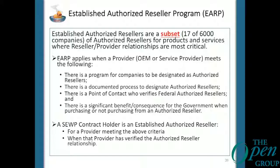We have an EARP — Enterprise Authorized Reseller Program. We found 17 companies that met the requirements: a central point of contact and, most importantly, repercussions for not buying through authorized channels — they don't support the product, you can't get maintenance, they won't service the product. So we identified those 17 companies, flagged them in our database as EARP, and for those 17 companies, if our contract holder is not marked as an authorized reseller, they are unable to quote those products on an RFQ.